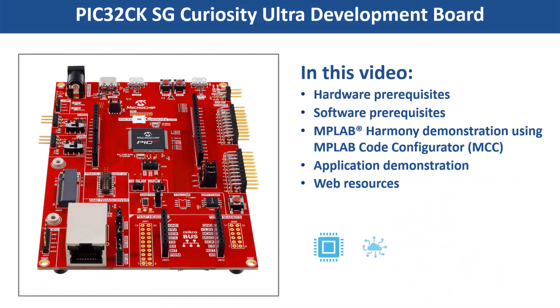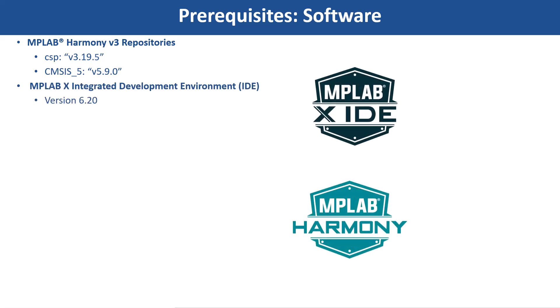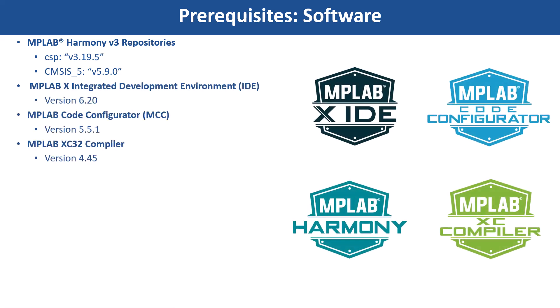In this video, we will show you how to get started with the PIC32CK-HG-Curiosity Ultra Development Board using MPLAB Code Configurator, also known as MCC. Clone the MPLAB Harmony V3 repositories and install the software shown here. You can use MCC Content Manager to clone these Harmony packages.